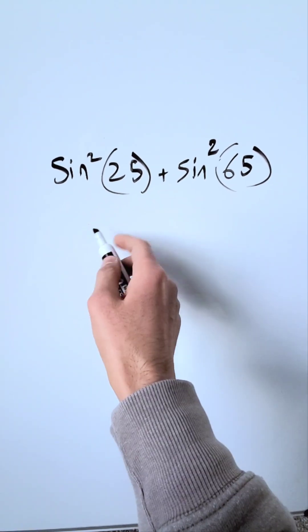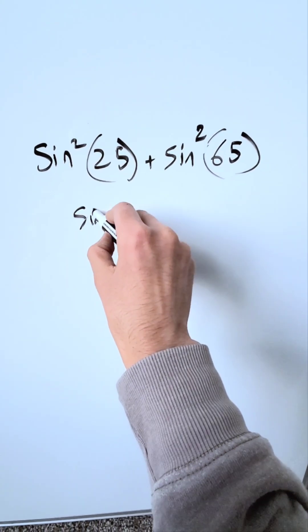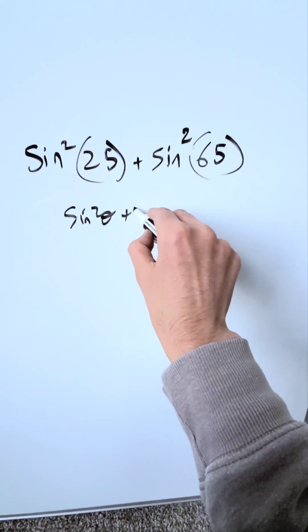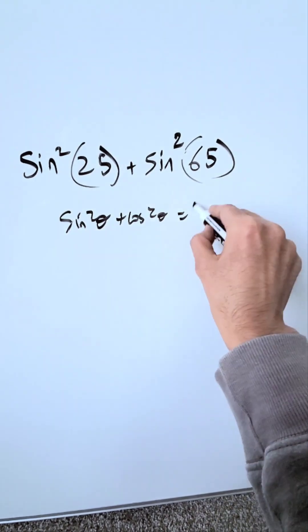Think of these two identities, both of these will come into play. One is your famous formula, sine squared theta plus cosine squared theta is equal to 1.